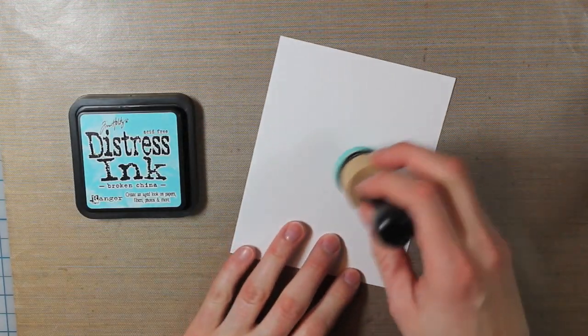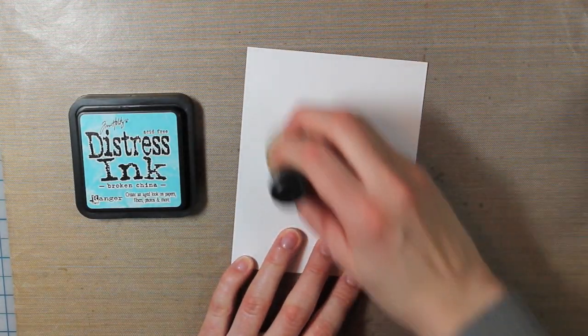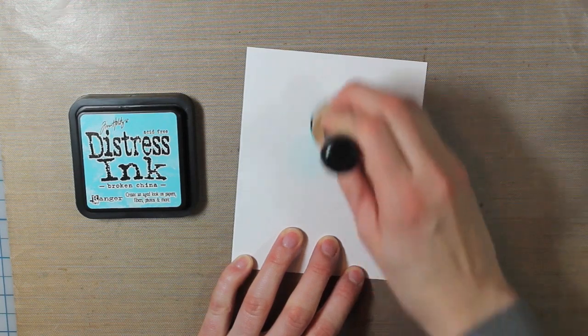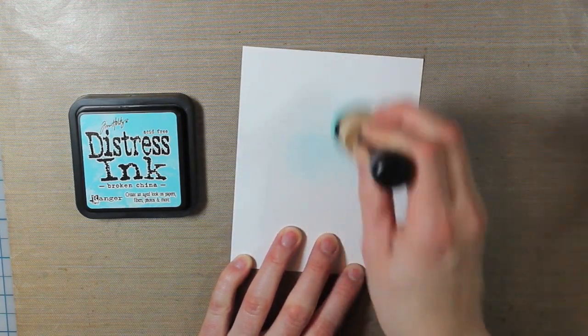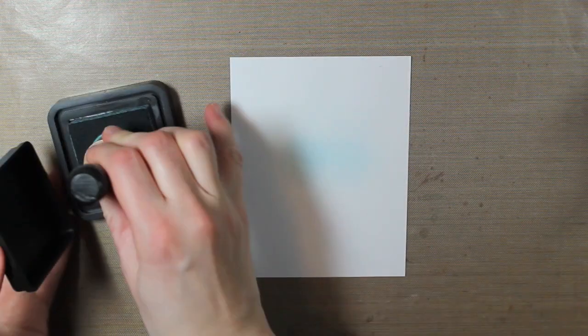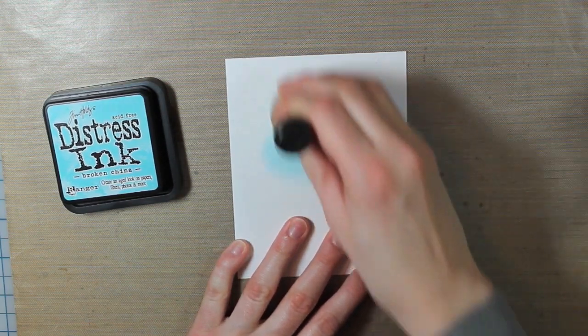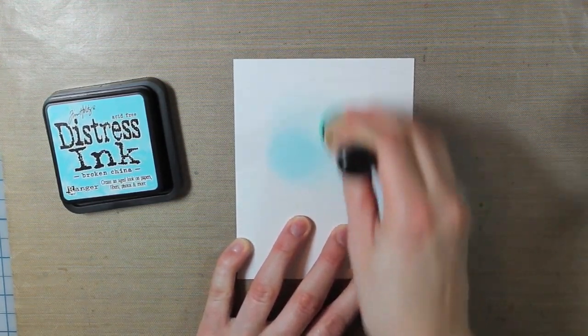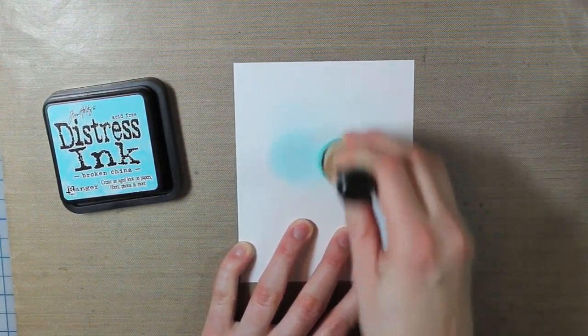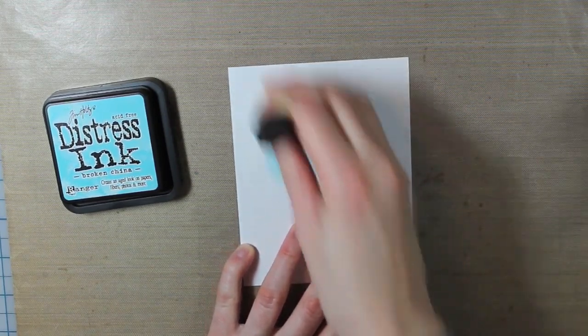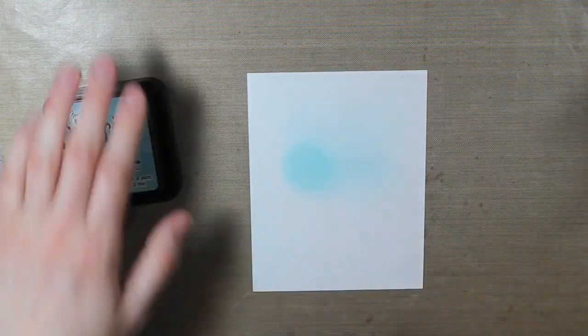So now I have a piece of white cardstock, and I am just using the Broken China Distress Ink. You can see I'm kind of starting in the middle. I'll show you what I'm going to be doing here. This is going to be the background. I just want a little bit of blue. And that spot that you can really see the blue is not really going to show because I'm going to cover that up.